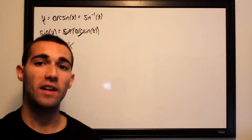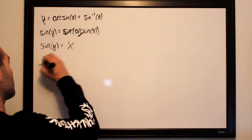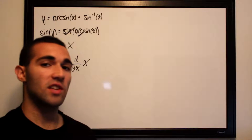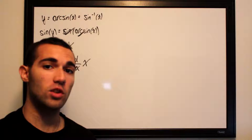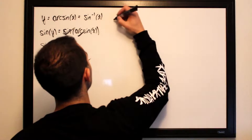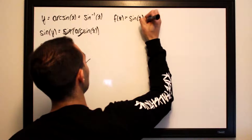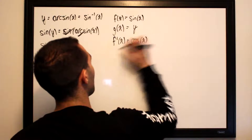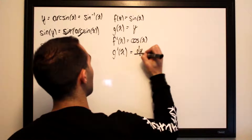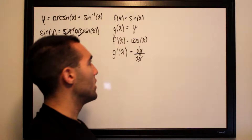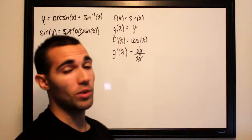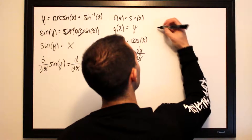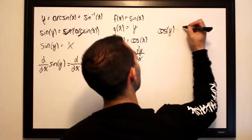Now we want to take the derivative of both sides with respect to x: d/dx of sine of y and d/dx of x. Sine of y is a y function trapped within a sine function, so we'll differentiate using the chain rule. Our outer function f(x) is sine of x, our inner function is y, the derivative of the outer function is cosine of x, and the derivative of the inner function is dy/dx. Using the chain rule — f prime composed of g multiplied by g prime — this gives us cosine of y multiplied by dy/dx.